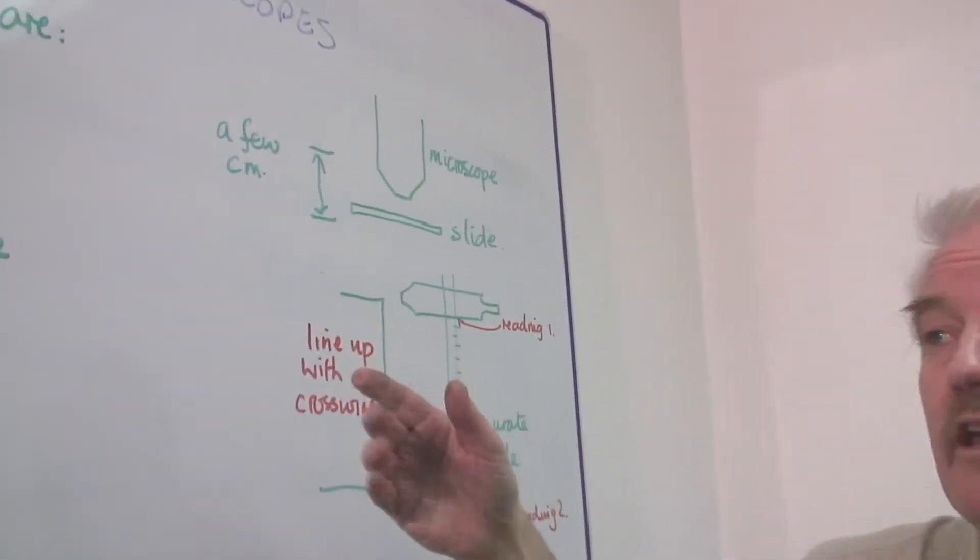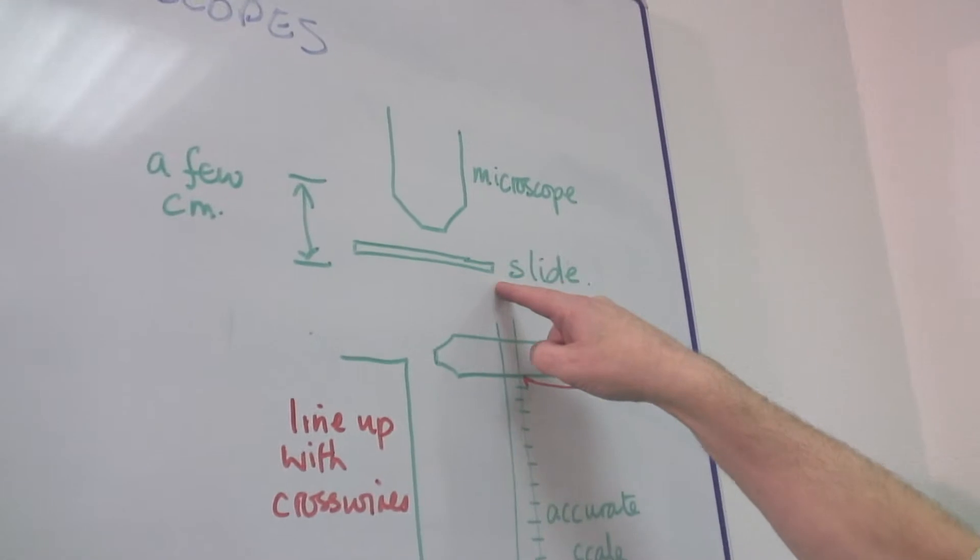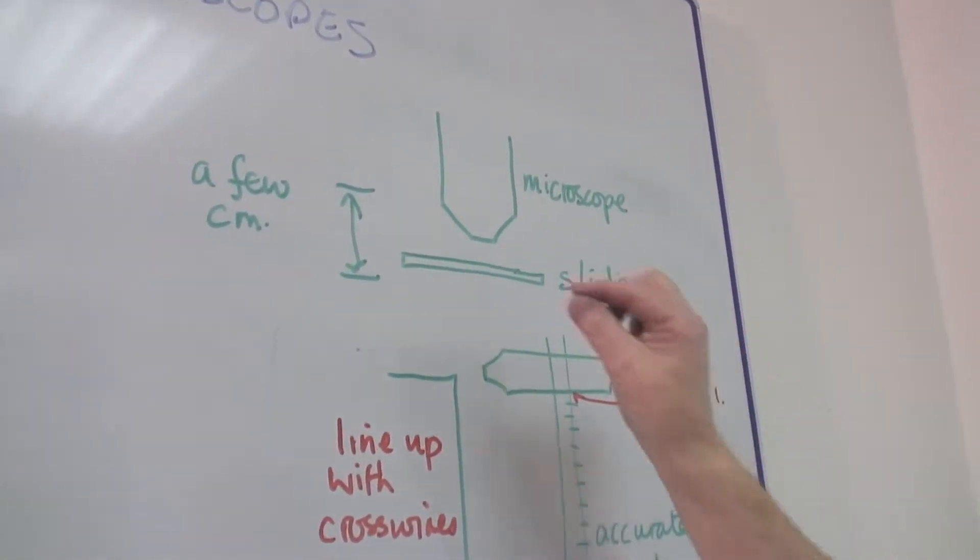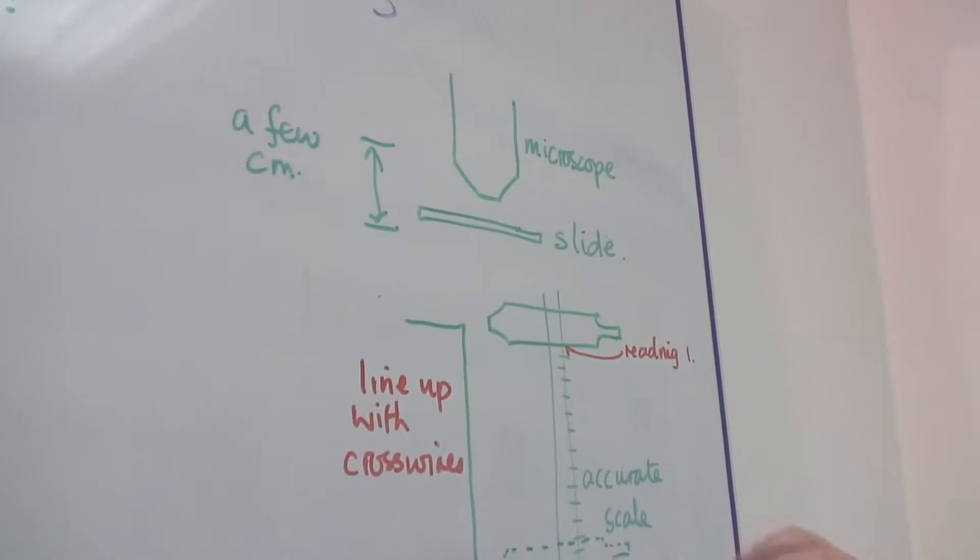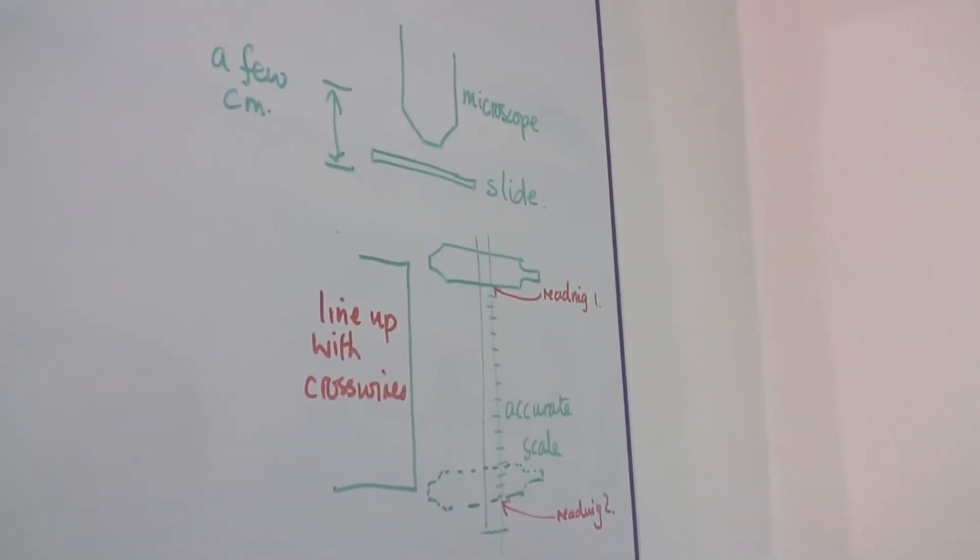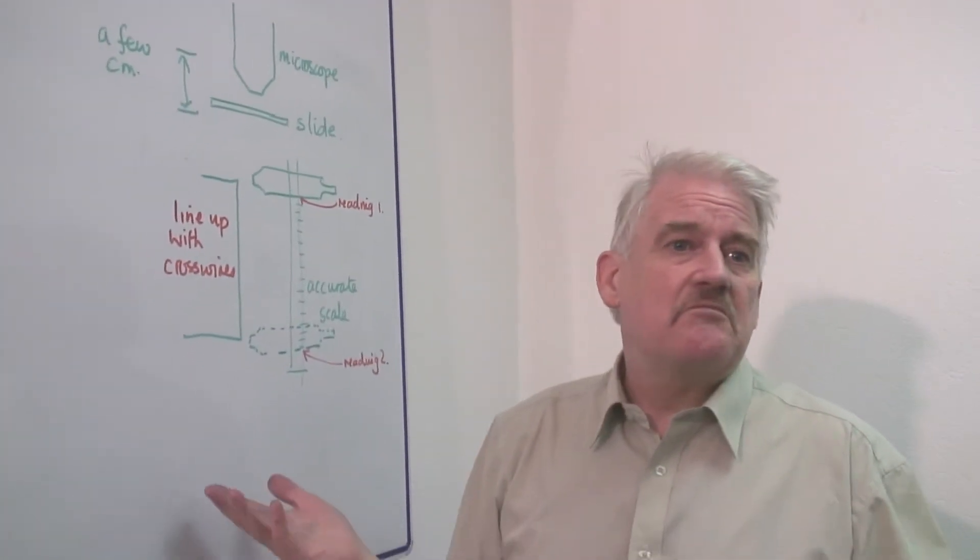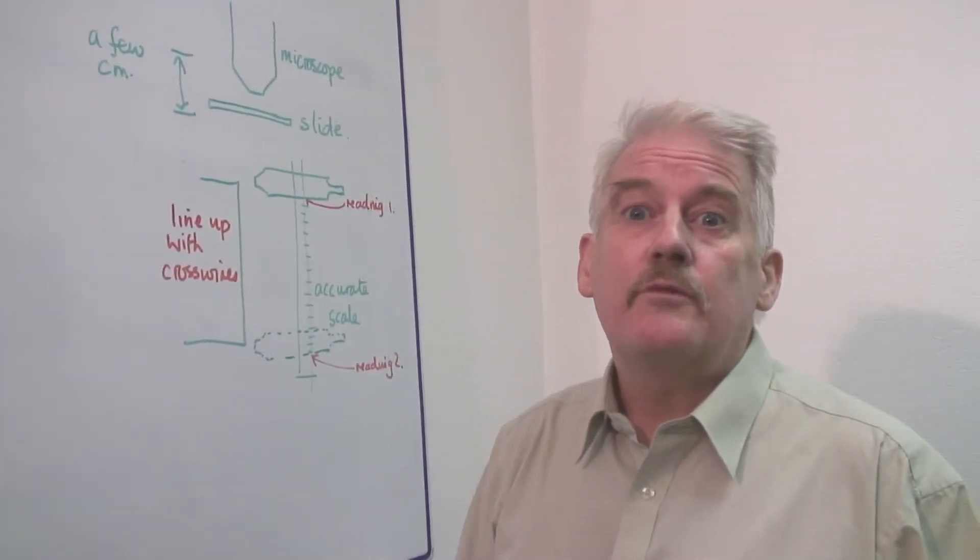And in biology, often we use a slide. On the slide, we put a section of something we're looking at or we put the object between two slides so that we can look at it in the microscope. The magnification might be between a hundred and two hundred or even more.